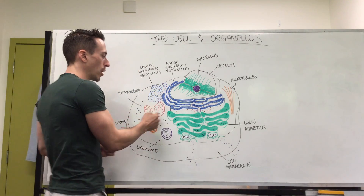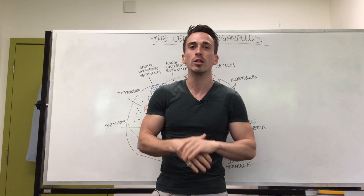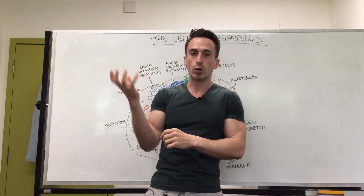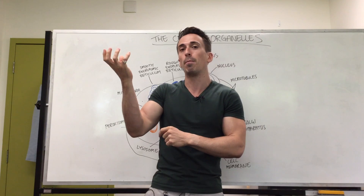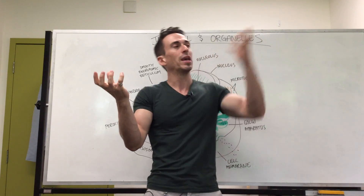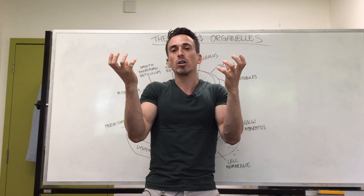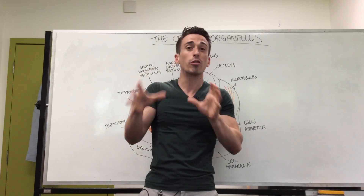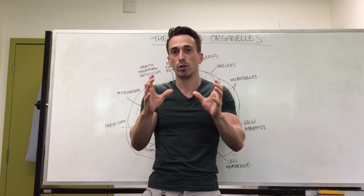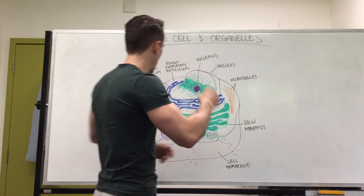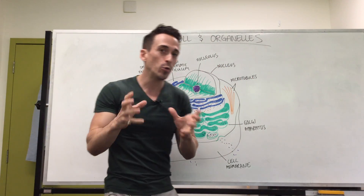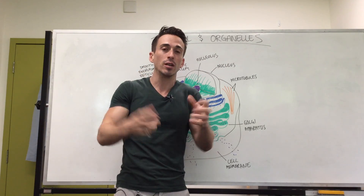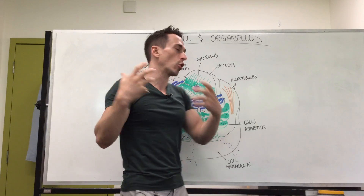Some other important structures include the mitochondria. The mitochondria create energy in the form of ATP. They can take glucose — the basic monomer of sugar — and oxygen, and together create ATP. One glucose molecule can create between 32 and 36 ATP molecules. The mitochondria also have their own DNA, which means they can make copies of themselves through binary fission.